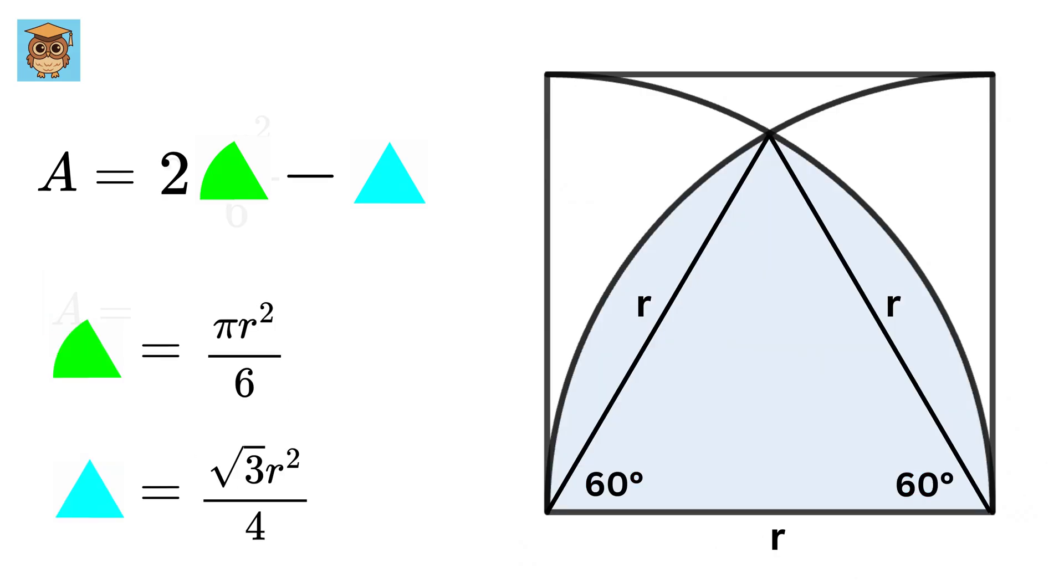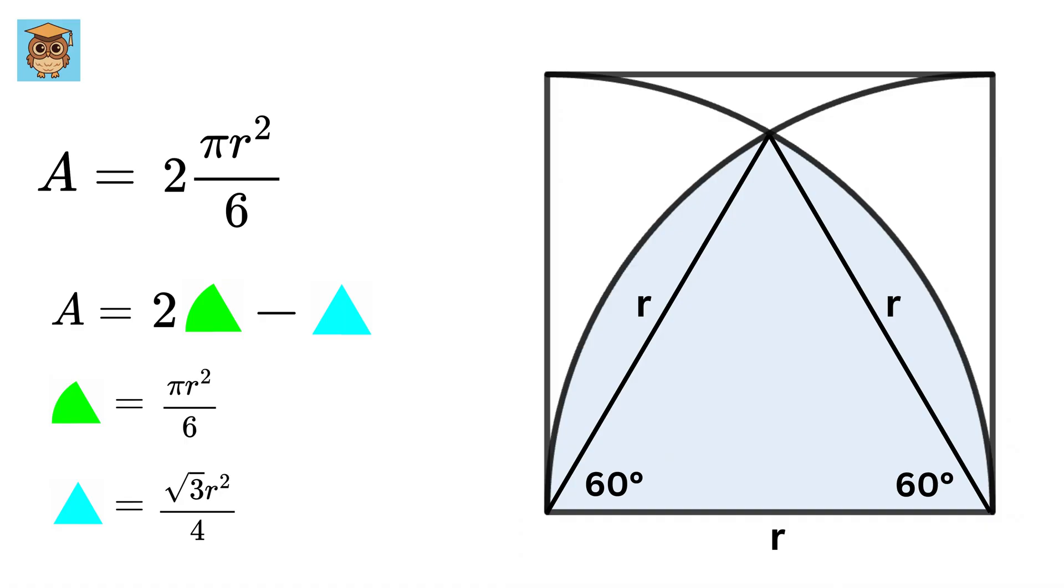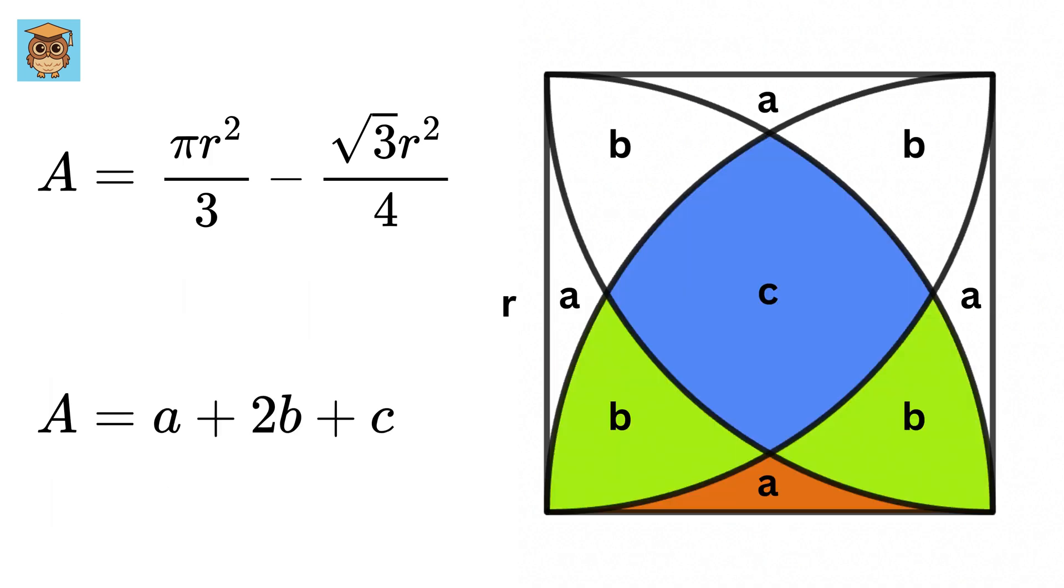So the area of this region is 2 times pi r-square by 6, or pi r-square by 3 minus root 3 over 4 times r-square, and this will be equal to a plus 2 times b plus c.